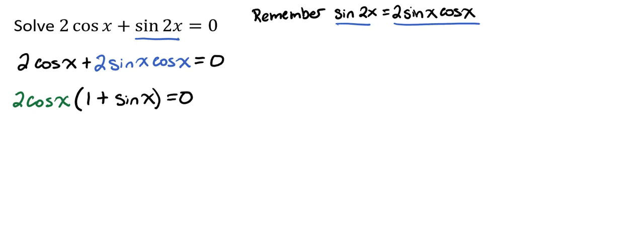From here, we can use the zero product property to separate our two pieces and set them each equal to 0, which gives us 2 times the cosine of x equals 0 and 1 plus the sine of x equals 0.